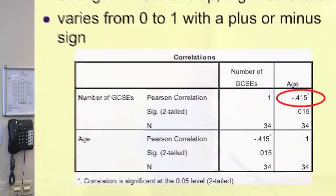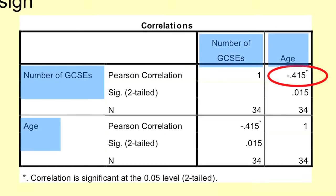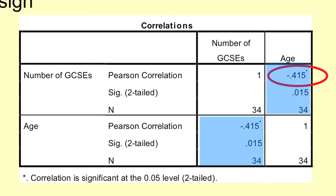What you'll get is the two variables — here's age and here's number of GCSEs, going back to the first example I used. There are two boxes and they're reflected in each other, showing the same numbers. You can correlate more than one variable at once — three against three, four against four — and you'll get lots more columns and rows, each duplicating everything twice. There'll be a diagonal line of ones you can ignore, with a set of boxes either side.